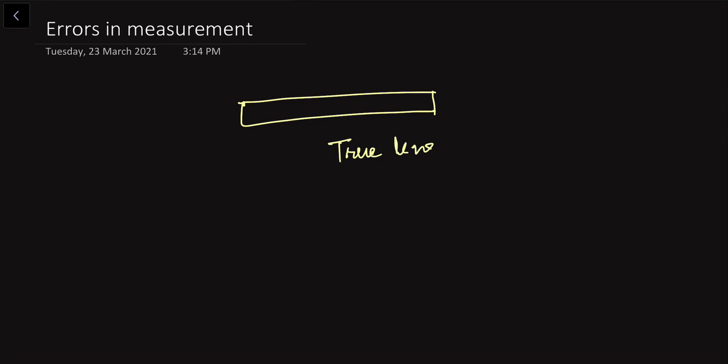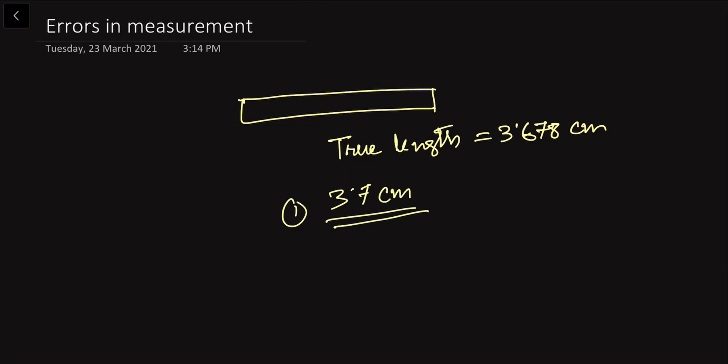In any measurement, every measured value is an approximate one due to errors in measurement. Suppose we have a rod whose actual or true length is 3.678 centimeters. If we measure this rod with a meter scale and get a value of 3.7 centimeters, the measured value deviates from the true value. This deviation is called the error.